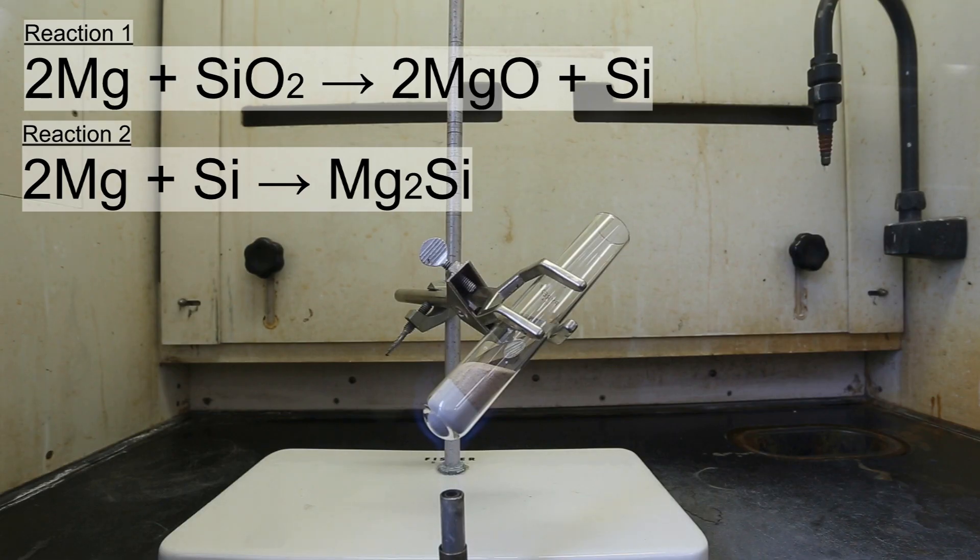In this experiment, there will be two reactions that are taking place, and these are shown above. For the first reaction, the magnesium must be ignited. Because sand was mixed into the magnesium powder, the concentration of silicon dioxide around the magnesium powder is much higher than that of oxygen.